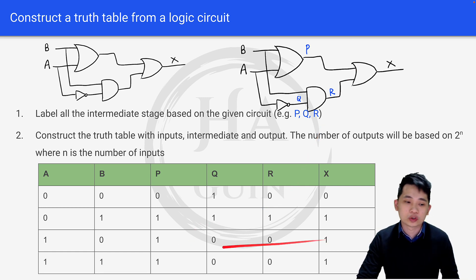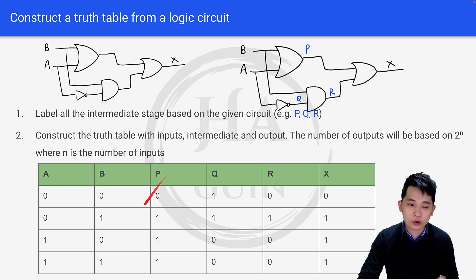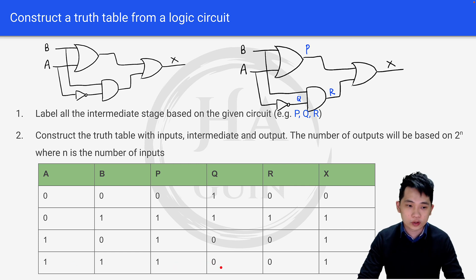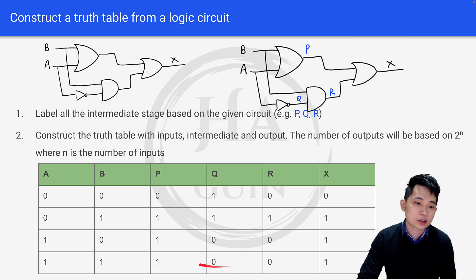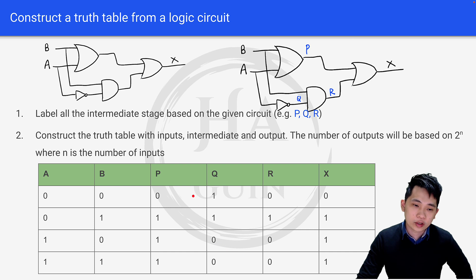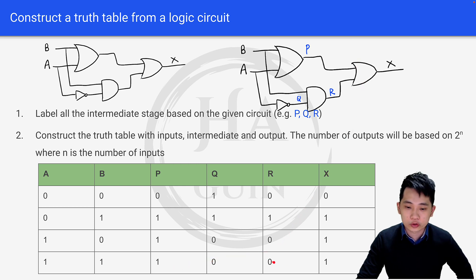The fourth row is A=1, B=1. P: A and B, 1 and 1, through an OR gate gives 1. Q is the inverse of A: 1 gives 0. R takes Q and B: 1 and 0 through an AND gate gives 0. X takes P and R: 1 and 0 through an OR gate gives X=1.